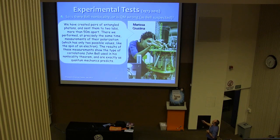Let Marissa explain. We have created pairs of entangled photons and sent them to two labs more than 50 metres apart. So this literally is a picture of one of the labs, and down the end of that corridor there is the picture of the other lab. So this is really where the experiment was done. There we have performed, at precisely the same time, measurements of their polarization. That's just one of the properties of a photon. Like the spin of an electron, it has only two possible values. So it's a nice, clean experimental property to measure. What do the results show? They show the type of correlations John Bell used in his non-locality theorem and are exactly as quantum mechanics predicts.